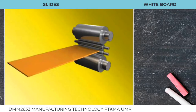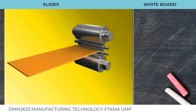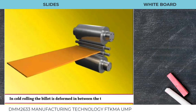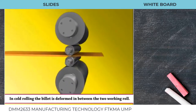Let us see an example of cold rolling. It consists of two rolls called the backup roll and the working roll. In cold rolling, the billet is deformed in between the two working rolls.